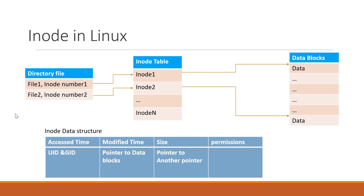When we create a file or directory in Linux, in addition to the name and data, we also have metadata. The metadata includes the size of the file or directory, the permissions on the file and directory, the access time or modified time, and the ownership information like user ID and group ID. This metadata will be stored inside a data structure called INODE.